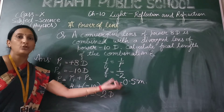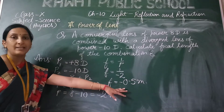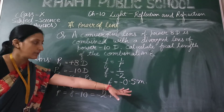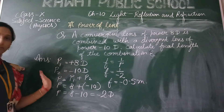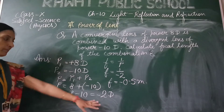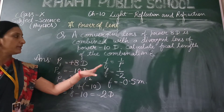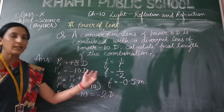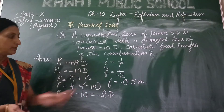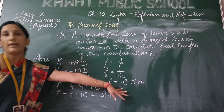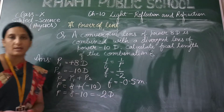The minus sign here shows that whatever combination it is, it will act as a diverging lens — that is, like a concave lens. So we can easily find out the power of the combination. If asked about the focal length of the combination, we can find it, and also determine the nature of the combination — here the negative sign tells us it will act like a concave lens.